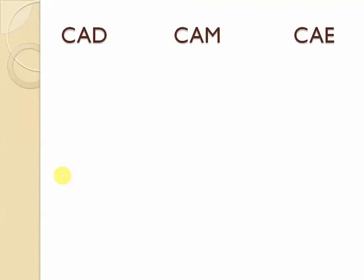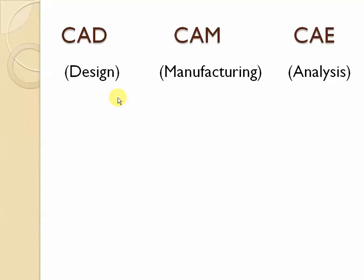Let's go to the design software, which are categorized into three segments. First one: CAD — Computer-Aided Design. Second: CAM — Computer-Aided Manufacturing. Third: CAE — Computer-Aided Engineering or Analysis. I will list out the software which come under these three categories.